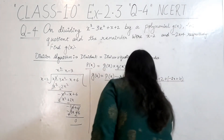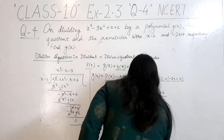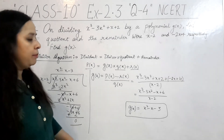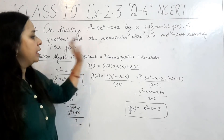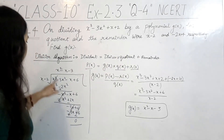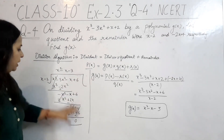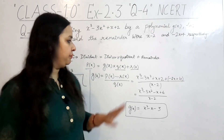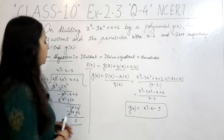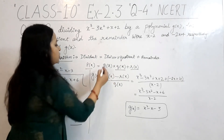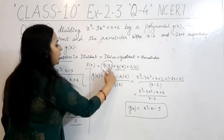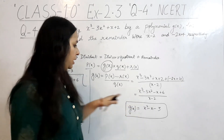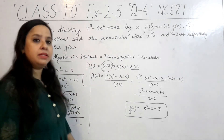We get the value of the division as x squared minus x minus 3. So this is the value of g(x). It was a very simple question. If you know the division algorithm and long division, you can easily solve this question. We had the dividend, quotient, and remainder given; we needed to find the divisor g(x) using the rearranged division algorithm and long division.